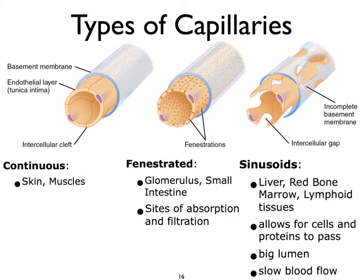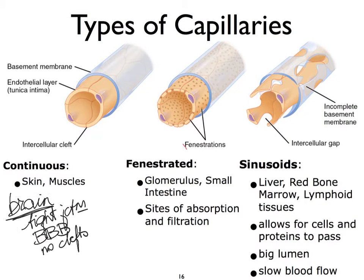Our next type of capillary we call fenestrated, because they have little holes in the walls of the endothelial cells. In Latin, fenestra literally means window. These holes are covered with thin little membranes. Clearly, this is going to be a slightly leakier capillary. We find this in areas of absorption, such as in the small intestine, where we need to absorb food particles that have been digested by enzymes — they're small enough to pass out of the lumen of the small intestine into these leaky capillaries.